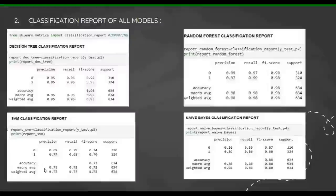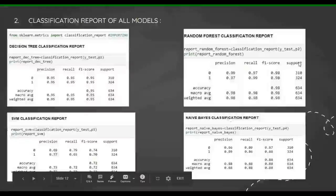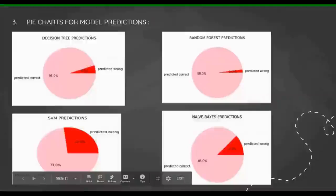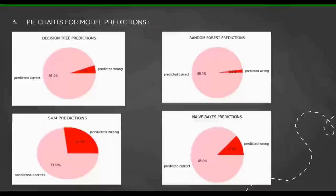Then I have made pie charts for model predictions. As you can see, random forest has predicted 98 percent of data as correct and 2 percent of data is wrong. So it has predicted 98 percent correct. You can see all the other three as well, and SVM again is the least suited model.